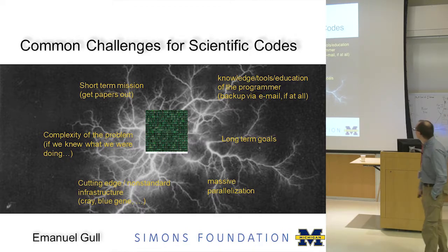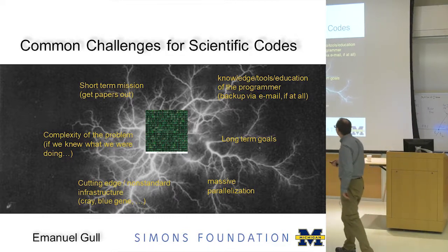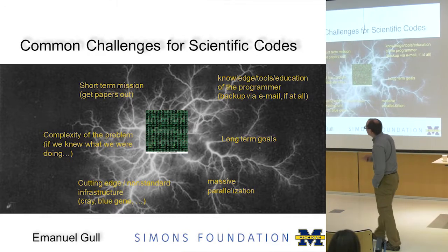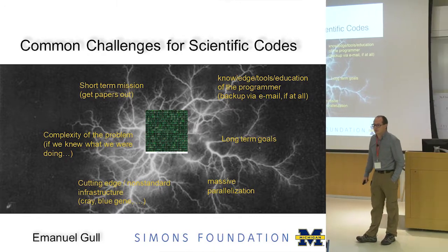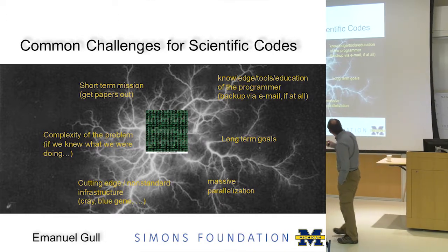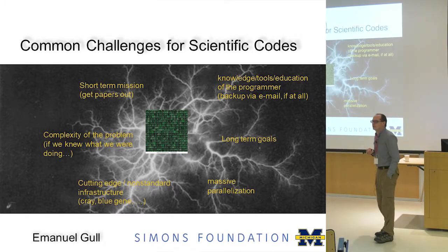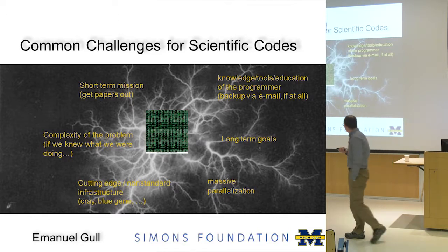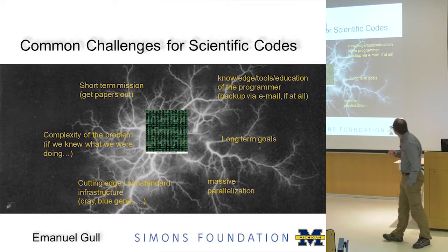Here are scientific codes. We're in a field of tension between various goals. All of you want to get a PhD, so we have a short-term mission: get the papers out as quickly as possible, no matter what it costs. At the same time, the problem is very complex — if we knew what we were doing, we wouldn't be doing it. We have limited time to invest in reading computer programming books. There are also long-term goals like getting a project lined up for many years, and scientific tool codes that run on the largest supercomputers in the country, which work differently from your PC.